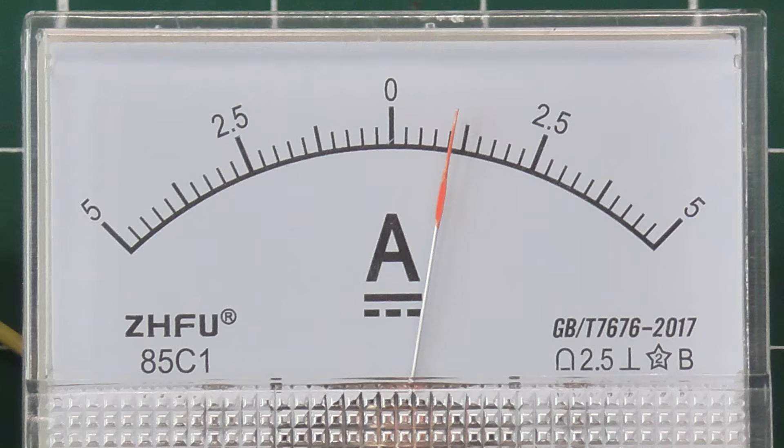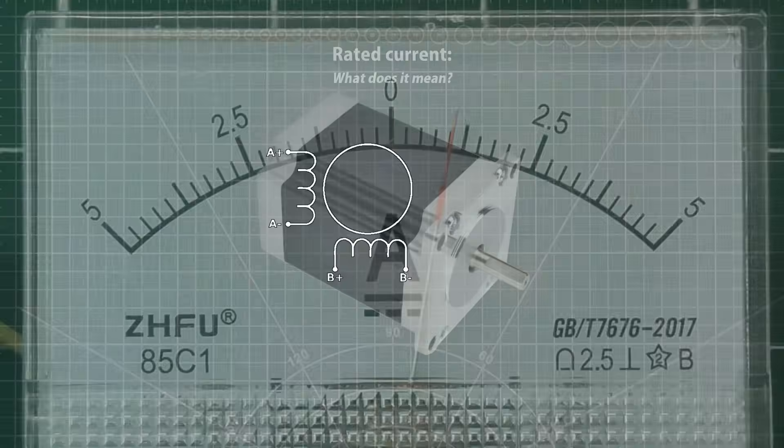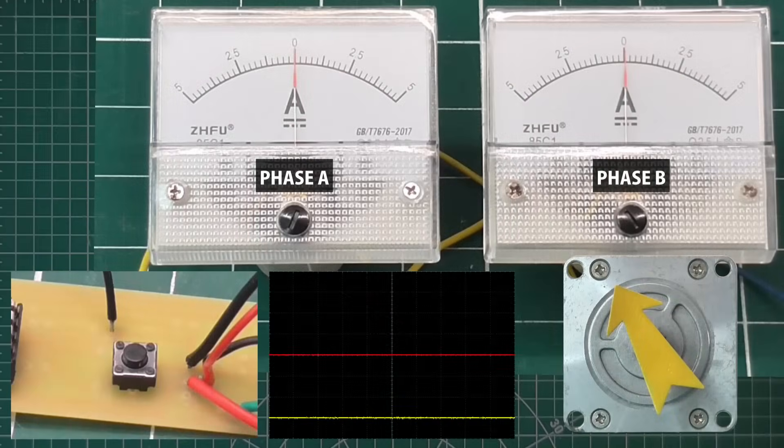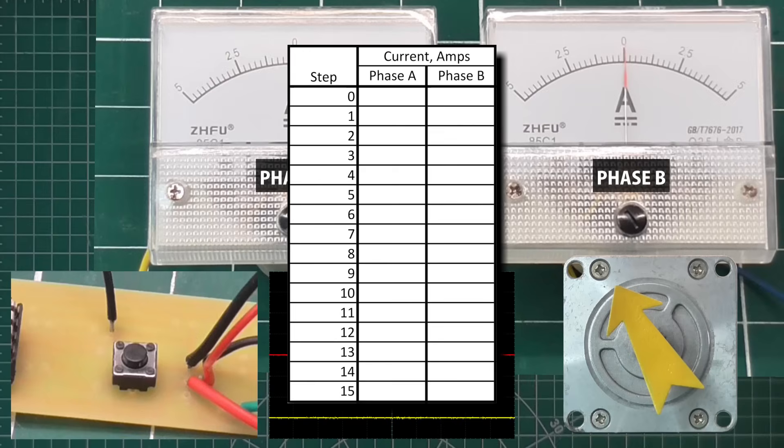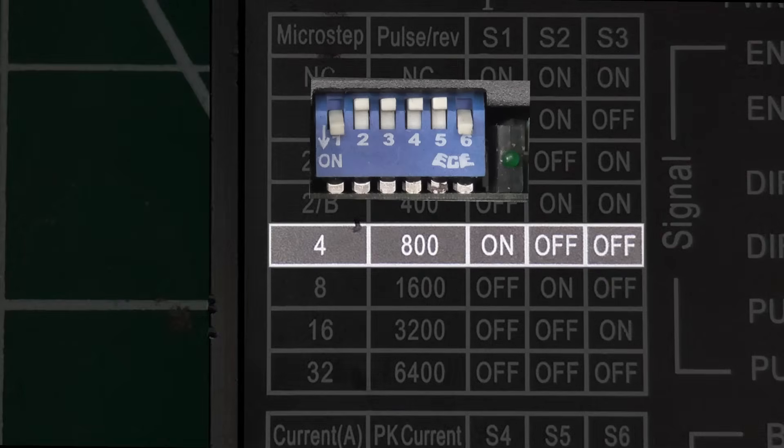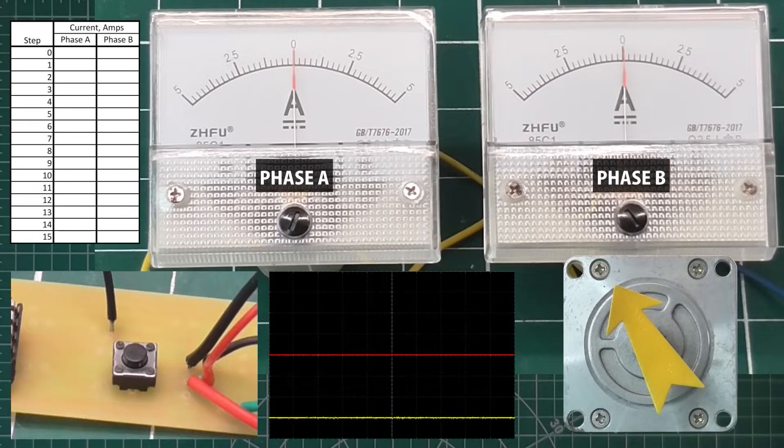Now, to answer the question that seems to confuse most people. Is the rated current drawn by the whole motor, or by each phase at the same time, making it twice that for the whole motor? To answer this, I'm going to step through one whole step cycle a single pulse at a time, and record the current of each phase at every point. I have the driver set to 4x microstepping, so that should be 16 pulses for one entire cycle. At the start, the current in both phases is 1 amp, which adds up to 2 amps total.